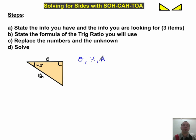Okay, B. State the formula of the trig ratio you will use. Well, which formula has H and A? H and A is here for cosine. So I'm just going to write cosine of theta is equal to adjacent over hypotenuse. Okay. Replace the numbers and the unknown. Okay, cosine of theta. I have theta. It's 40. Cosine of 40. That didn't work out nicely. Cosine of 40. And adjacent. My adjacent was C. And my hypotenuse is 12. So I replace my known and my numbers for what I have. And I'll solve.